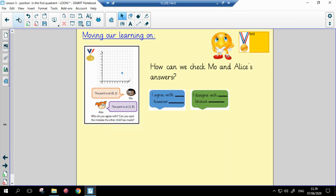So I've given you for gold a do you agree or disagree question we really like those and we must remember to use our talk scaffolds and I've put some examples here for you to answer the question I've also said how can we check Mo and Alice's answers. Mo says the point is at eight three and Alice says the point is at three eight. I think the best thing to do to answer this is to actually work out the coordinate for yourself and then you can agree or disagree. Good luck with that question.